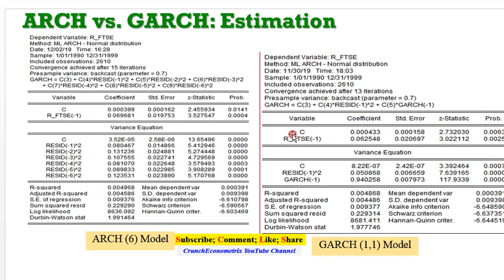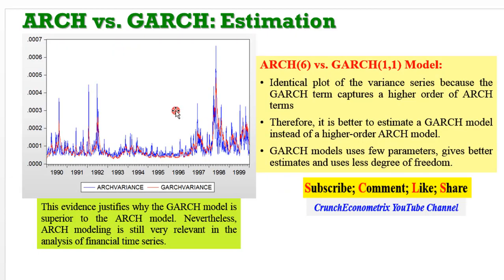So this gives a clear justification as to the parsimony of the GARCH model. So this is what we just estimated. Here we have the results for the ARCH(6) model. All 6 coefficients are significant, all of them positive. And we have our GARCH(1,1) model, positive coefficients, and all statistically significant. So here you can clearly see from the plots of the variance of both models,